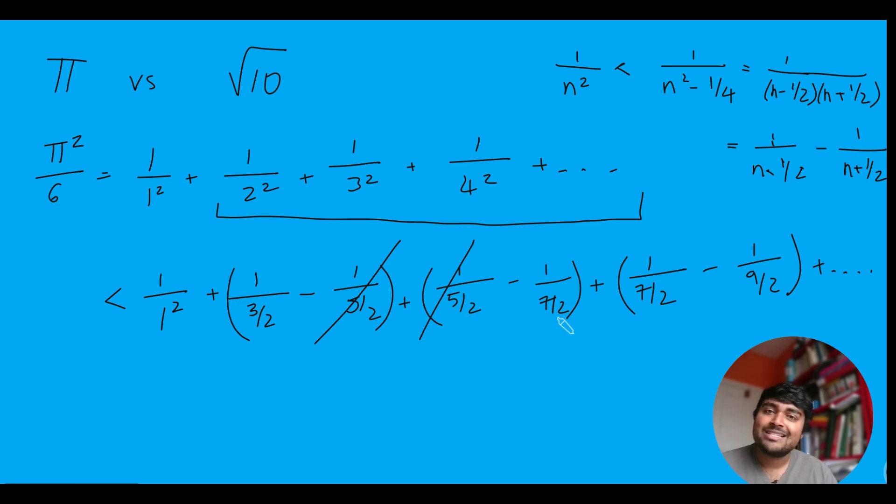We've got minus 1 over 7 over 2 here, and a plus 1 over 7 over 2 here. So those are going to cancel out. We've got minus 1 over 9 over 2 plus 1 over 9 over 2 here. So those are going to cancel out as well. And so everything thereafter will also cancel out, and we're just left with this here.